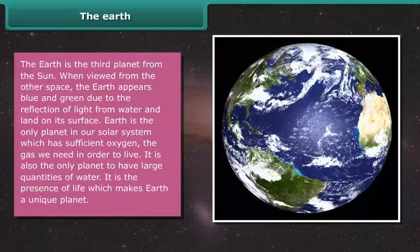The earth is the third planet from the sun. When viewed from outer space, the earth appears blue and green due to the reflection of light from water and land on its surface.